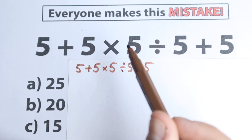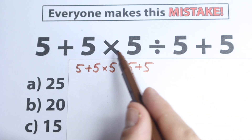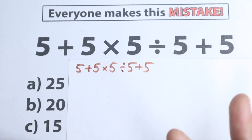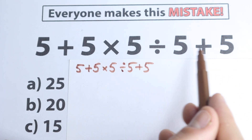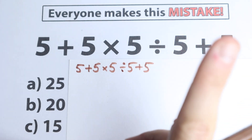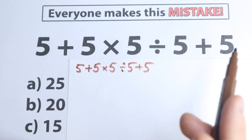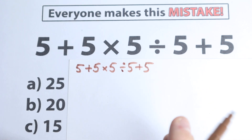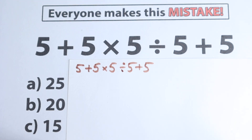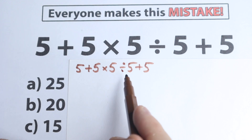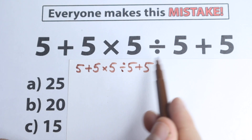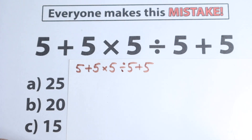But in math we're interested in one correct answer — we cannot have two answers here, we cannot say this equals 25 or 100. There is one correct answer, and for this we need to know the correct order of operations. Because obviously, whatever order of operation we select is going to create a different answer, so we need to understand what is the correct order to do this problem.